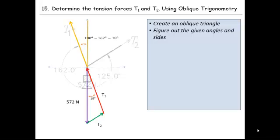We'll do the same thing over here between the vertical and T2, so that's just 180 minus the given angle of 125, which is 55. So we can see this in purple now, and that actually corresponds to the angle between the 572 Newtons force and T2 in our triangle. So here we have another 55 degree angle.